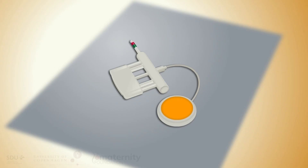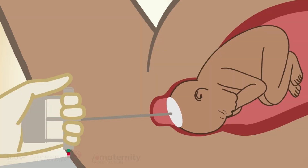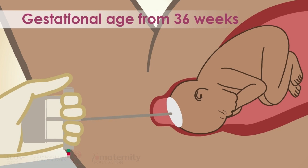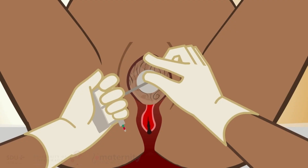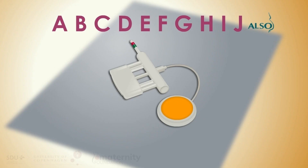To perform vacuum extraction, the head must be well engaged, cervix fully dilated, membranes ruptured, and the gestational age must be 36 weeks or more, although pregnant women at a gestational age of less than 37 weeks should be delivered at a hospital. The risk of perineal trauma and minor trauma to the head of the baby is increased at vacuum delivery. Following is a structured approach to vacuum delivery.